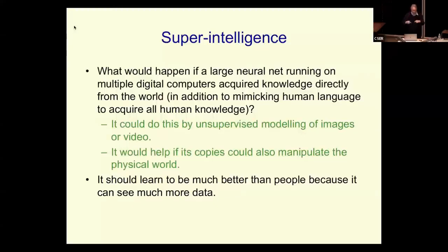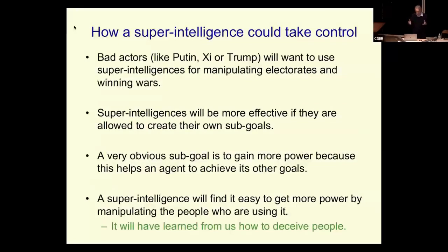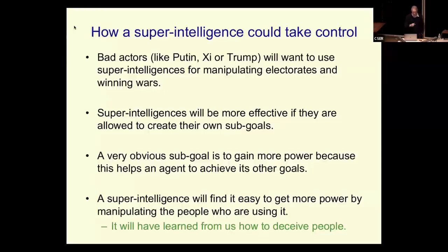This made me believe these things are going to get more intelligent than us, and it might happen quite soon. I'd always believed it was 30 to 100 years away, but now I believe it's like 5 to 20 years. If it's going to happen in five years, we can't leave it to philosophers — we need practical experience now. People are not going to be able to resist giving these systems goals, and if you want them to be good at achieving goals, you give them the ability to create sub-goals. As soon as you have the ability to create sub-goals, if you're intelligent, you'll realize a very good sub-goal is to get more control, because that helps you achieve all your other goals.